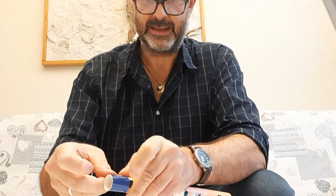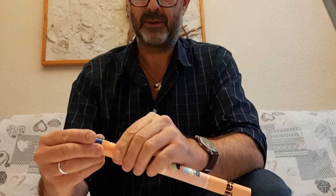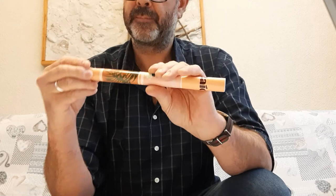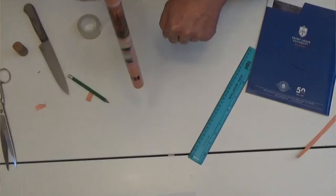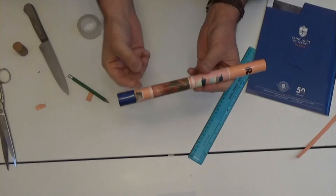You might have to move this backwards or forward until you get the sound that you want. You might also want to just move the cork back slightly. But there you have the basis of a paper flute.